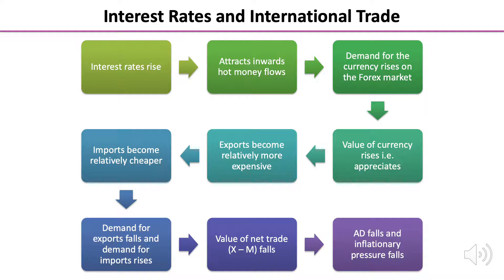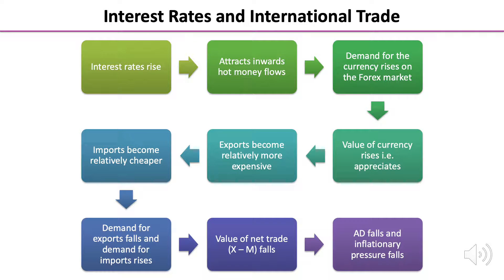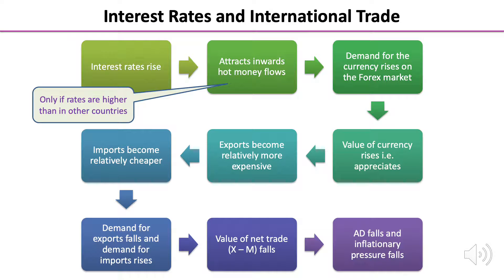Now, using the approach from the previous two slides, can you break this chain using your own economic knowledge? Pause the video, give yourself two or three minutes, and see which elements you can cast a critical eye over to try to break the chain of analysis. We start off with interest rate rises that attract inward hot money flows. Our first critical point is that this will only happen if rates are higher than in other countries — if the interest rate goes up in the UK, it will only attract a hot money flow if it's higher than ECB interest rates or rates in the United States. In other words, the hot money flows may not occur.